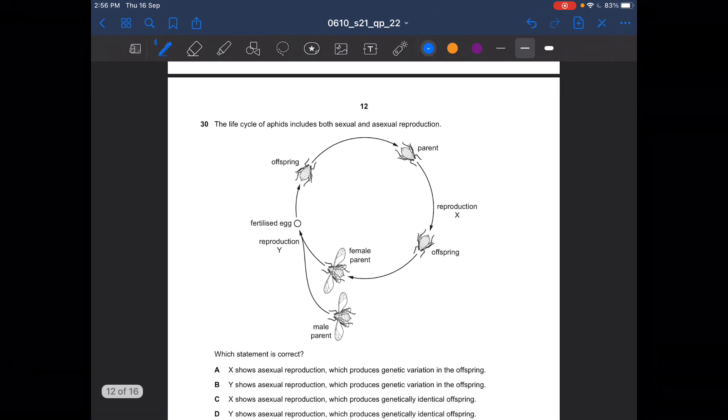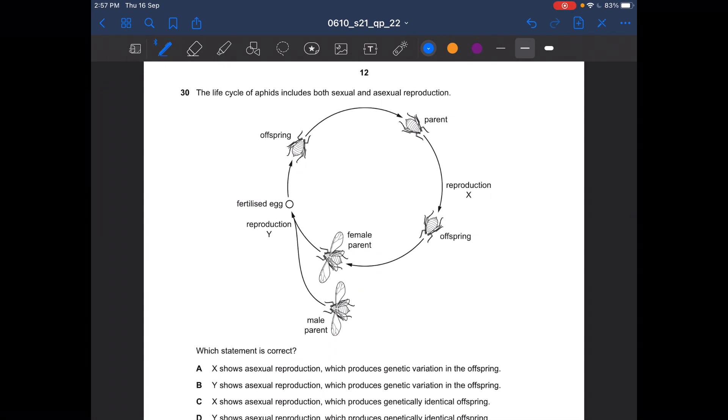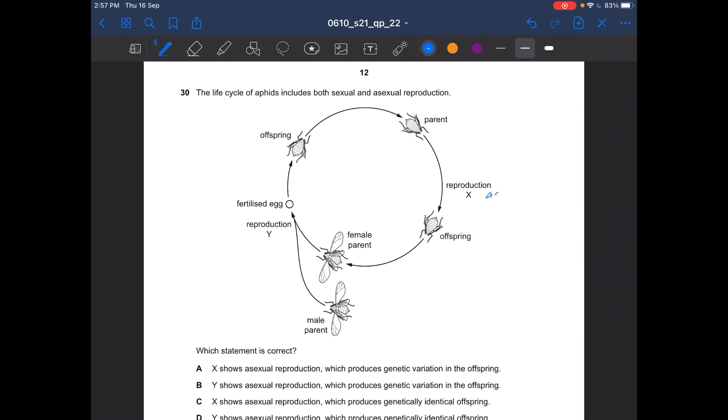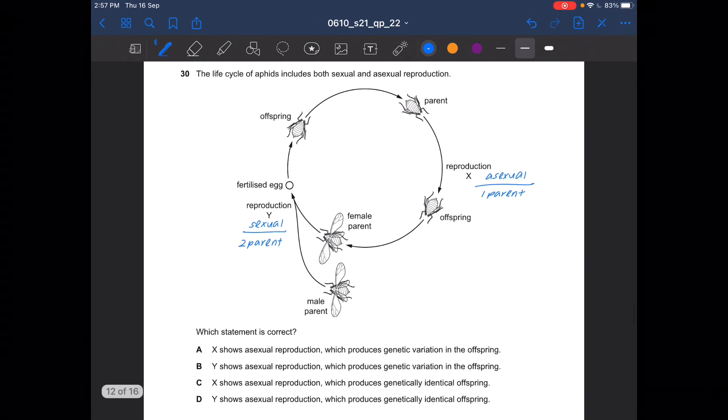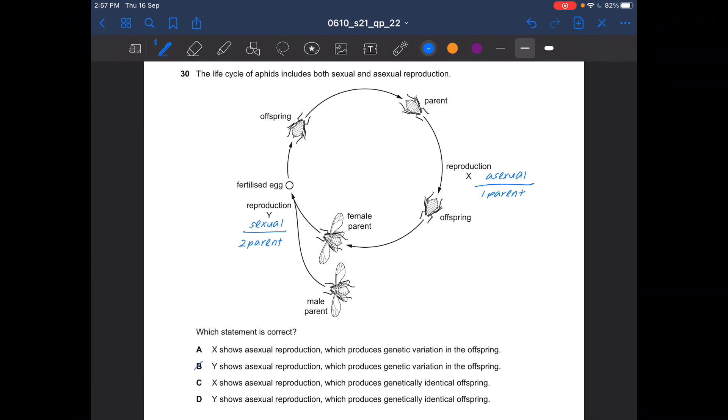The life cycle of aphids includes both sexual and asexual reproduction. Which statement is correct? Reproduction X is asexual as it requires one parent only. Reproduction Y is sexual reproduction, it requires two parents. So X is asexual. So can't be B, can't be D. Asexual reproduction produces genetically identical offspring. So the answer is C. There will be genetic variation if it is sexual reproduction.